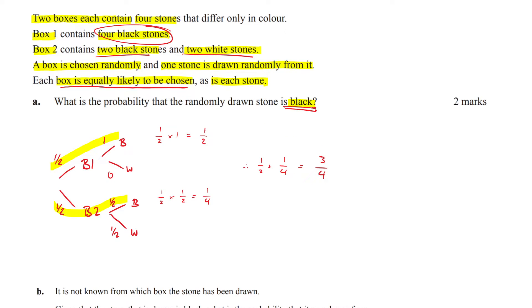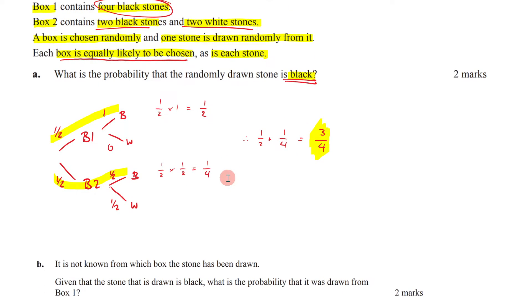So don't be like me. Don't make stupid mistakes. A half times one is a one. What was I thinking? All right, there we go. Three quarters. We then move on to our next one.